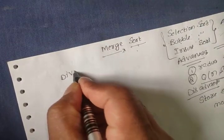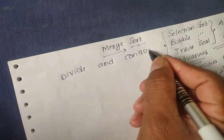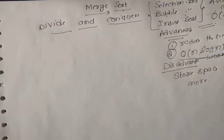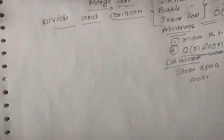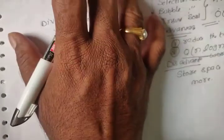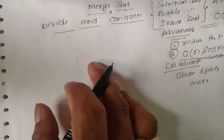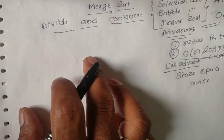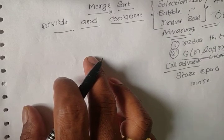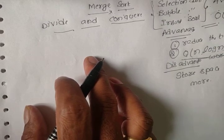In merge sort we use the divide and conquer method. It follows two rules: one is division and the second is combining. Now I will explain merge sort with an example and algorithm so you can easily understand what merge sort is, how it takes more space, and how it takes less time.